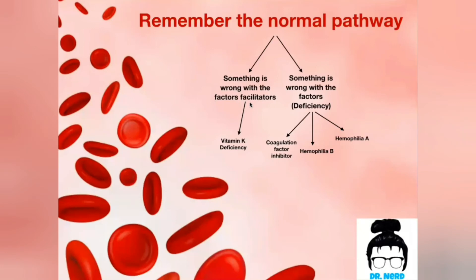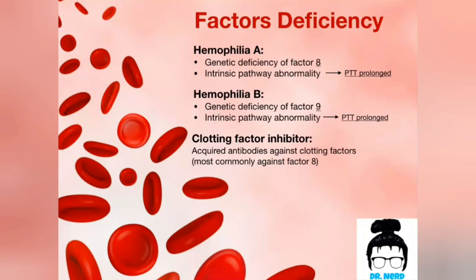Let's discuss the first etiology: factors deficiency. Remember that all the factors are produced by the liver, so whenever the liver is diseased, the factors will be deficient. Hemophilia A is a genetic deficiency of factor VIII. Factor VIII is involved in the intrinsic pathway, and so in this abnormality, BTT would be prolonged.